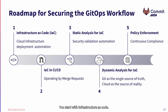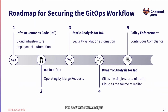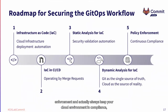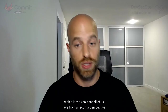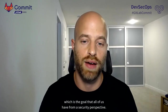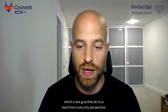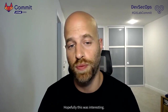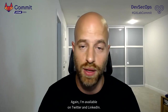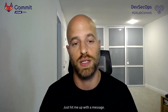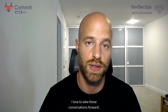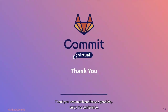To wrap up, the idea is simple: you start with infrastructure as code, wrap it with CI/CD — GitLab — and operate it through merge requests. You start with static analysis for security, then advance to dynamic analysis. That allows you to do policy enforcement and always keep your cloud environment in compliance, which is the goal all of us have from a security perspective. Thank you very much — hopefully this was interesting. I'm available on Twitter and LinkedIn, so send me a message. I love to take these conversations forward. Thank you and enjoy the conference.